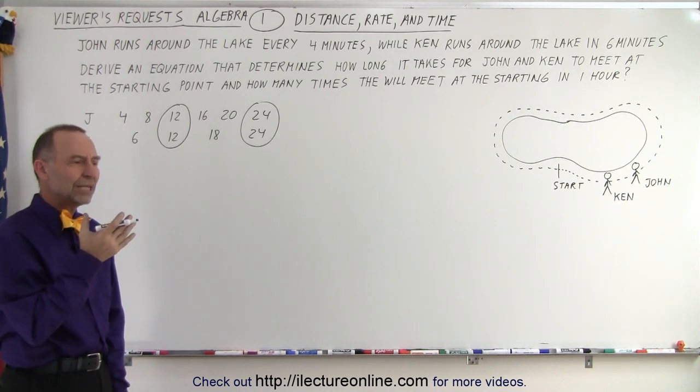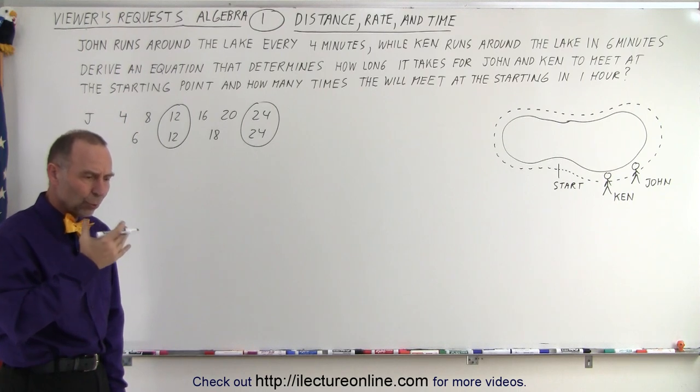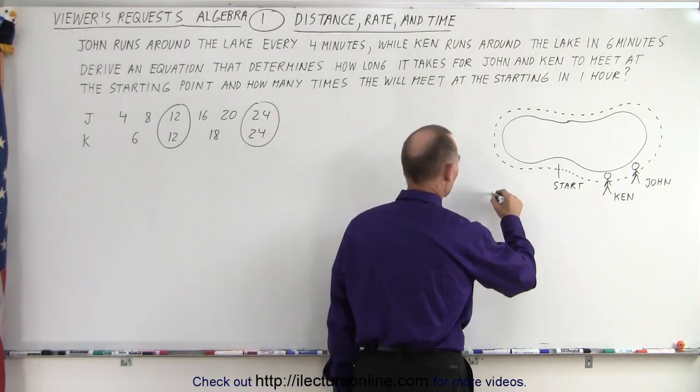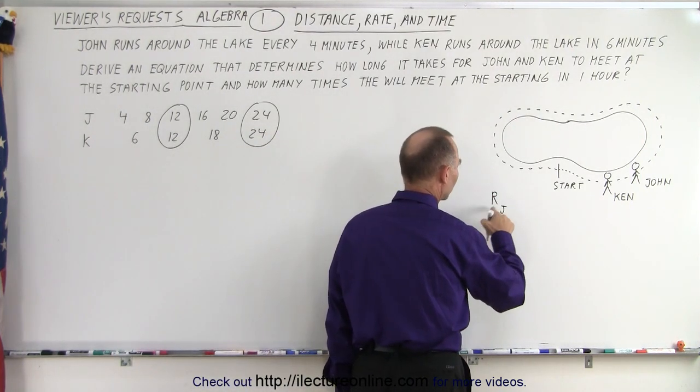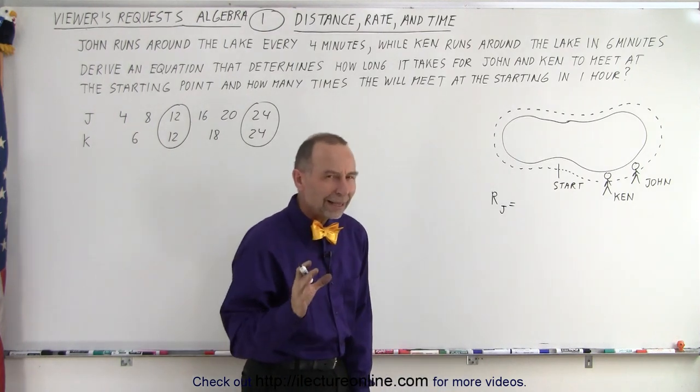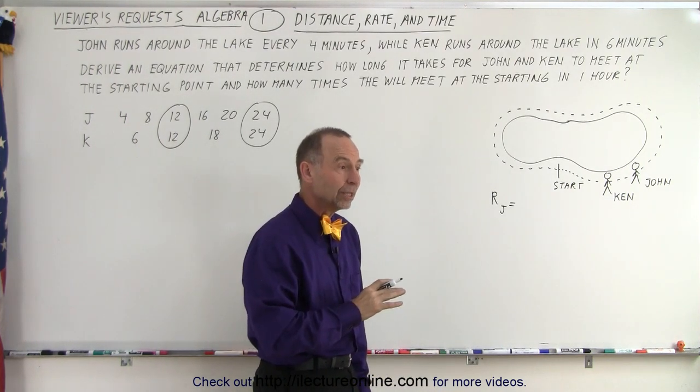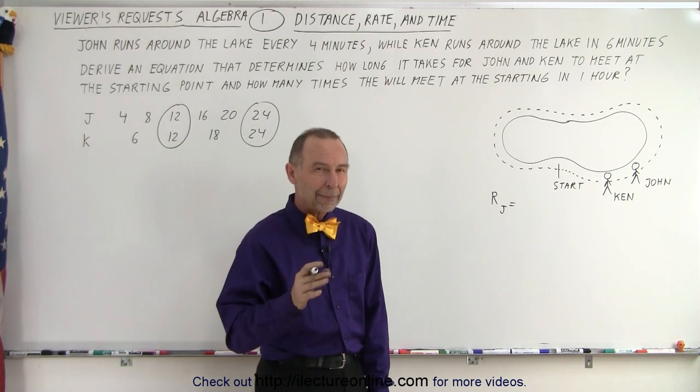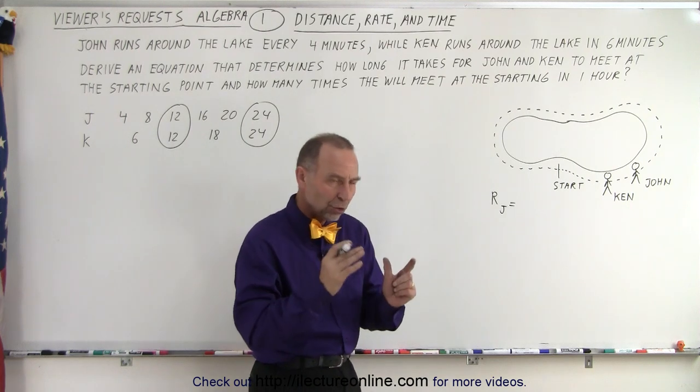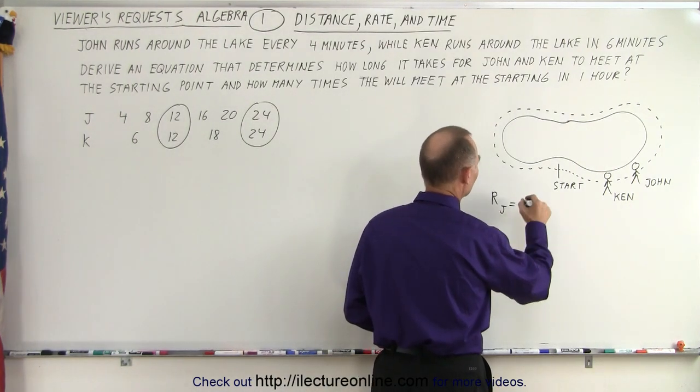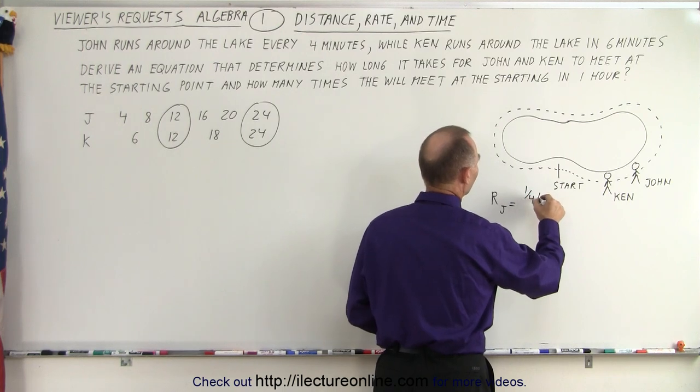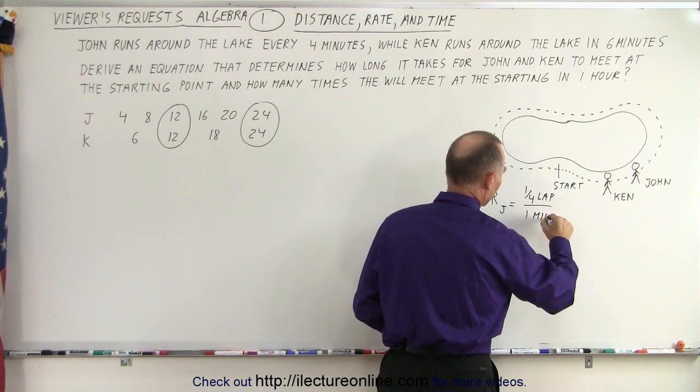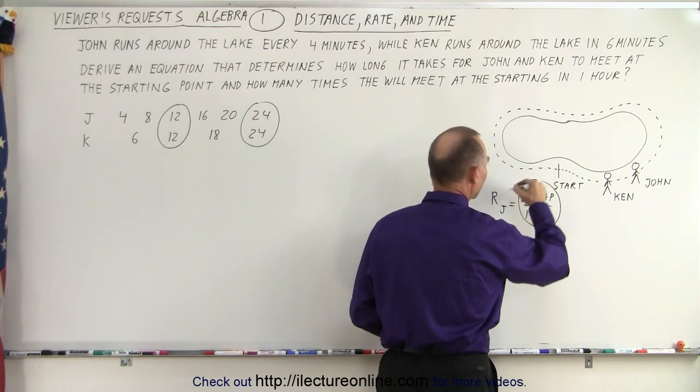We need to come up with something that involves distance, rate, and time. So first, let's come up with the rate. The rate for John, we'll write as R sub J, is equal to one lap in four minutes, or a quarter of a lap in one minute, because rate is usually expressed in terms of the unit time. In other words, the rate is one quarter of a lap in one minute. That is the rate for John.